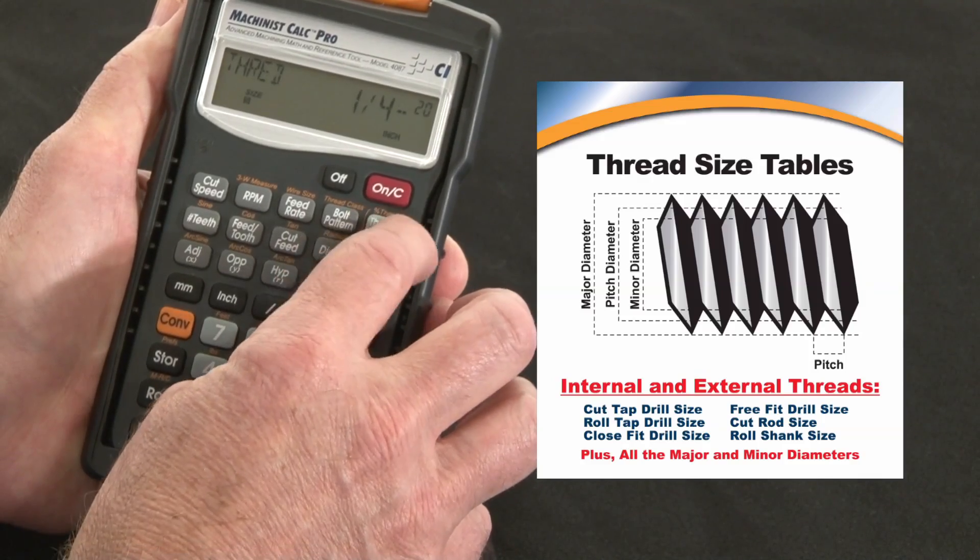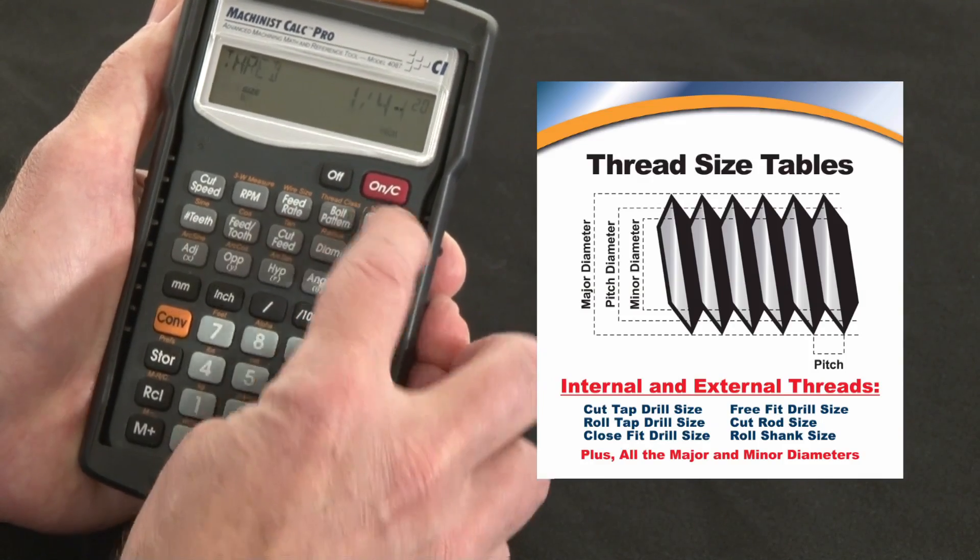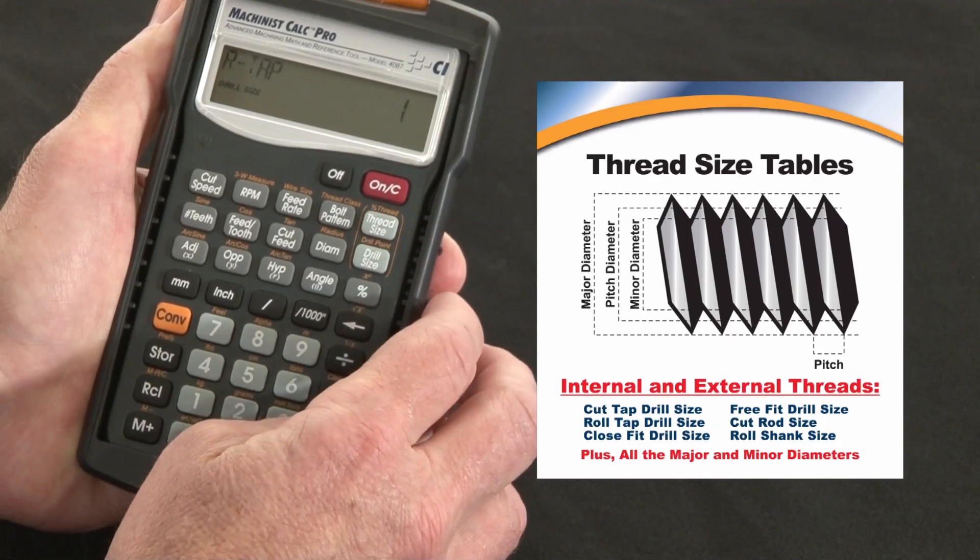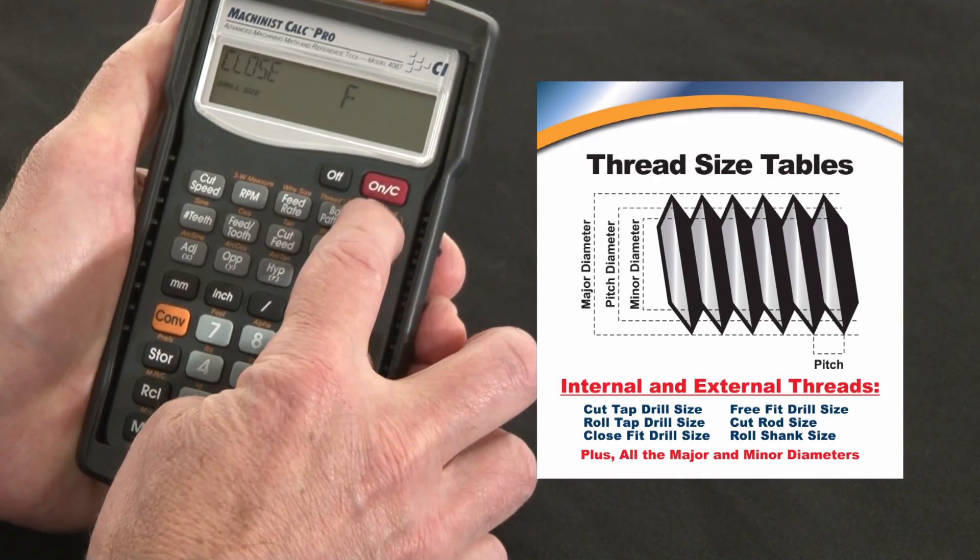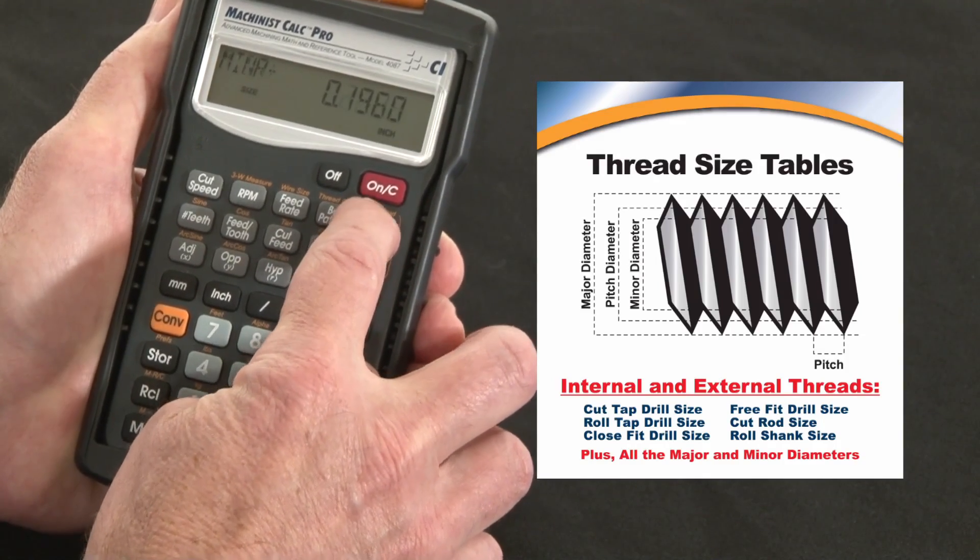So now I just go back and start pressing it. There's our 1.25 again. Press it. Cut tap is now 4, roll tap is now 1, and so it's changed all the sizes and all the characteristics all the way down through.